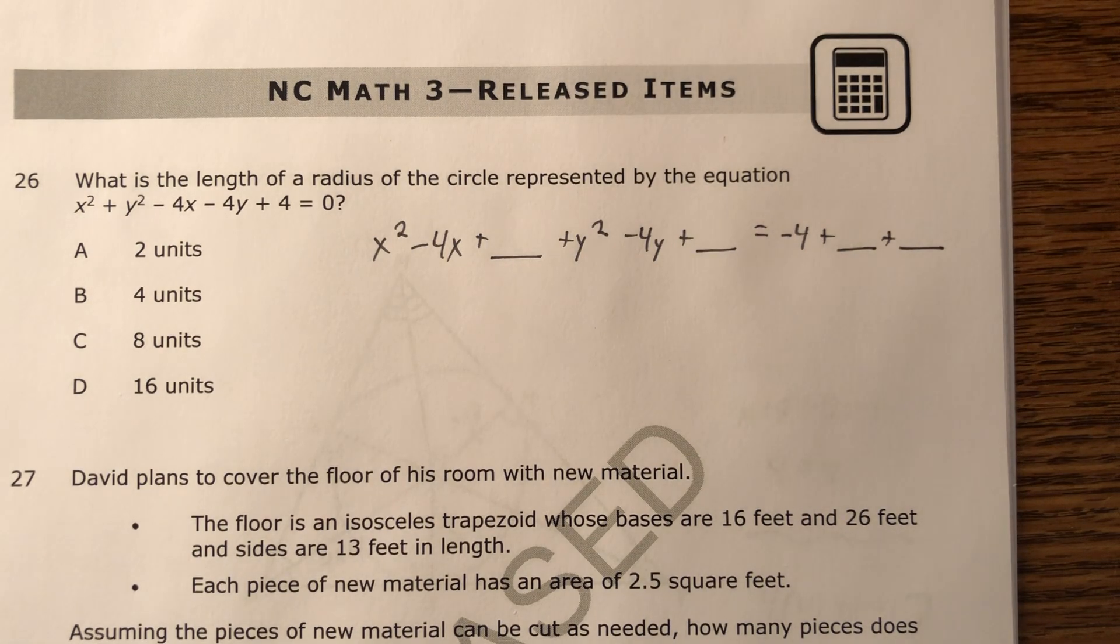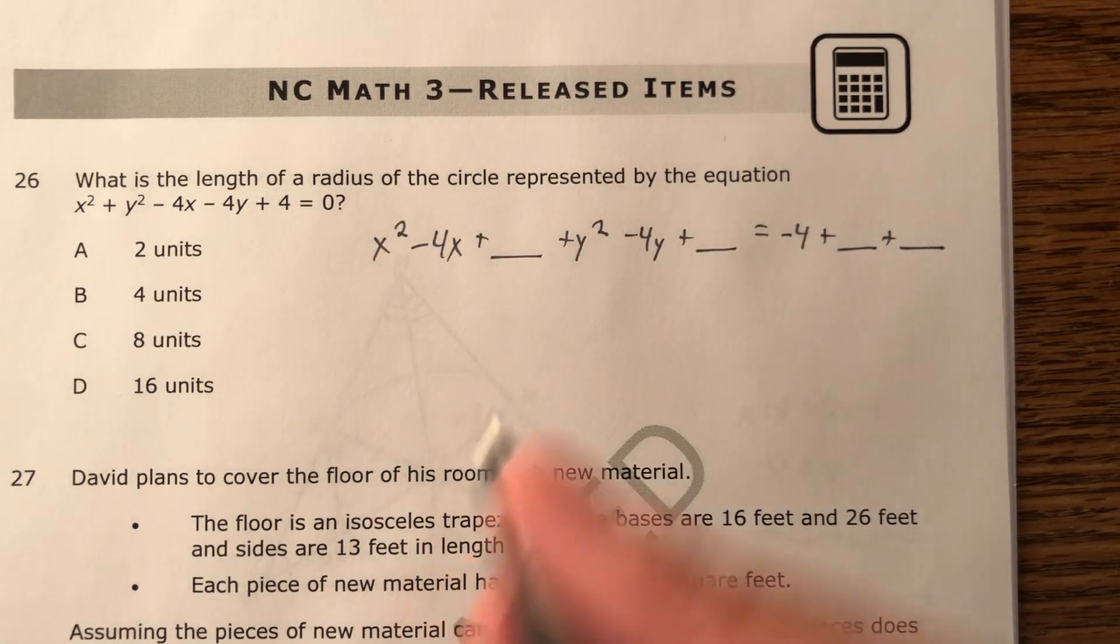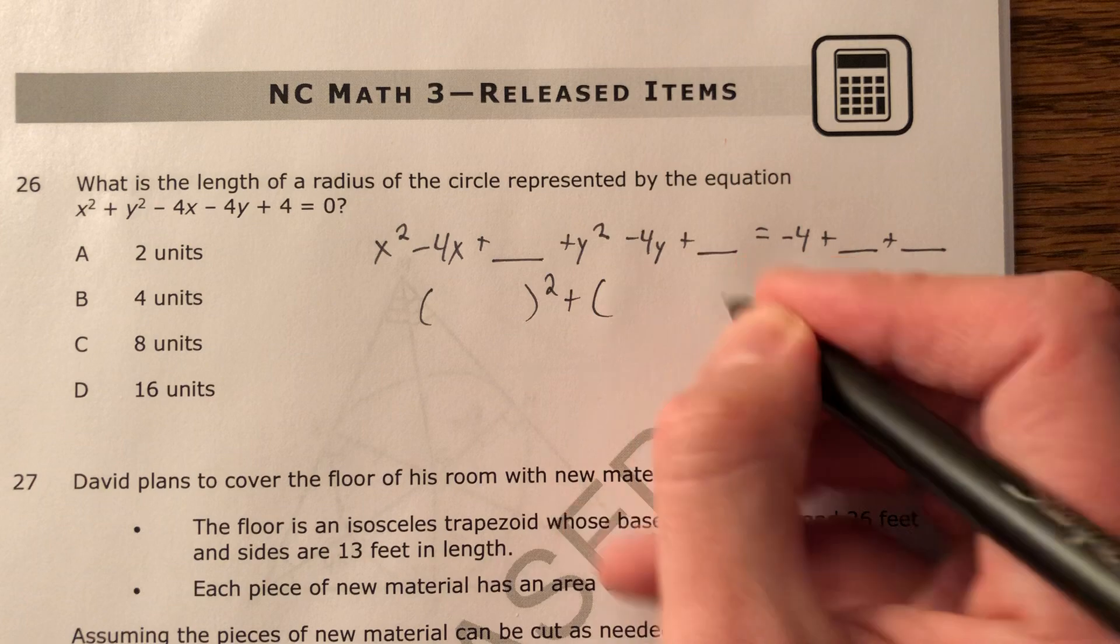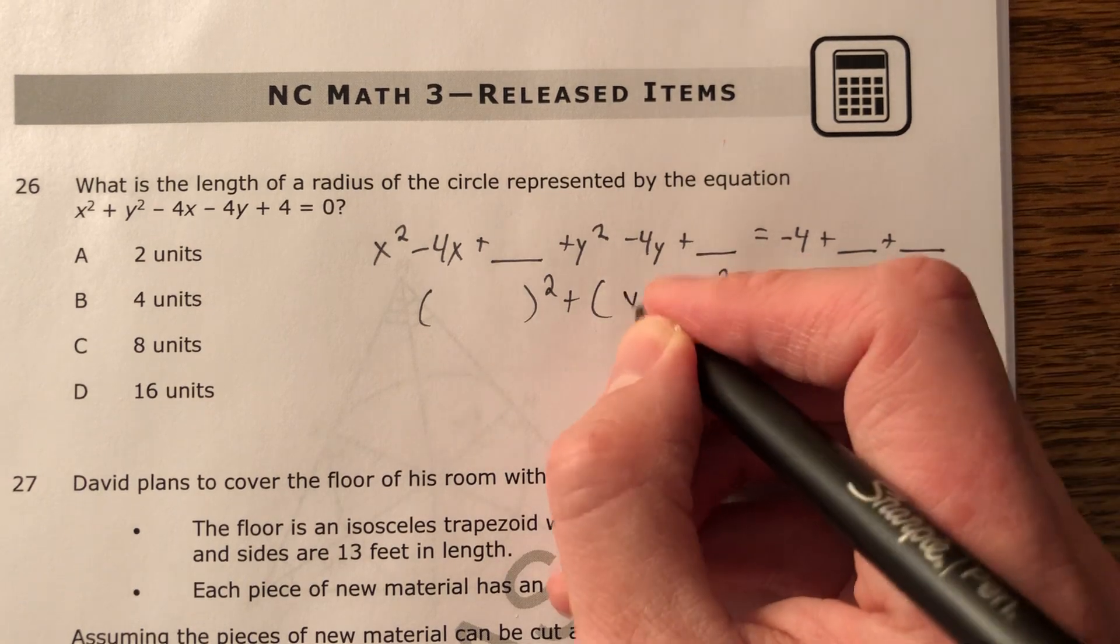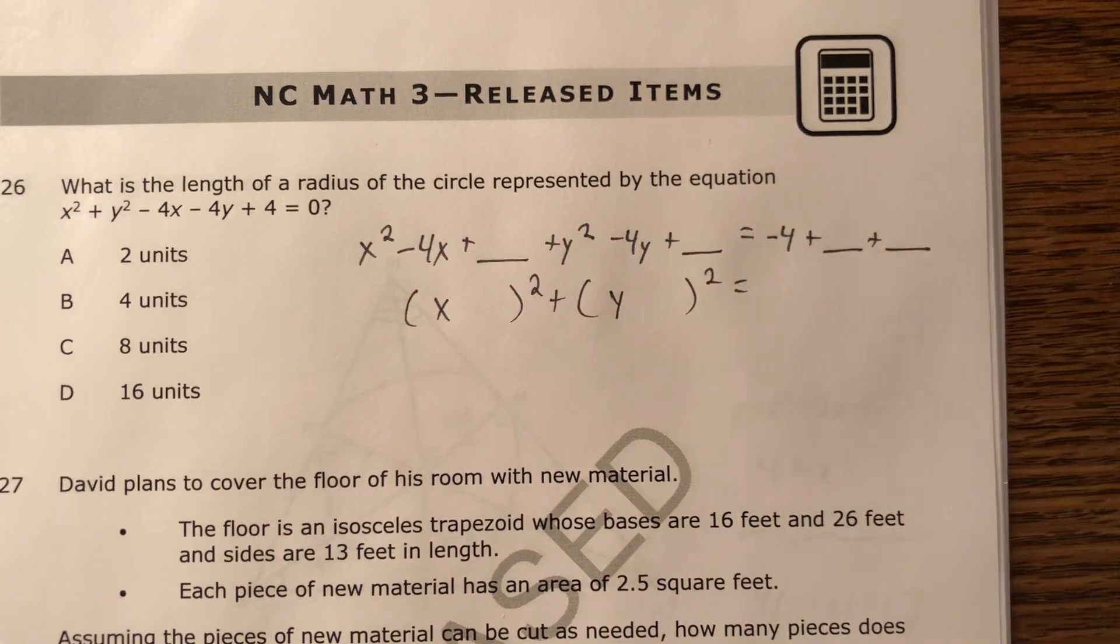So I'm going to fill in these blanks. I'm going to fill in the blanks with the number that is going to eventually make me be able to do this, equals something. Okay?